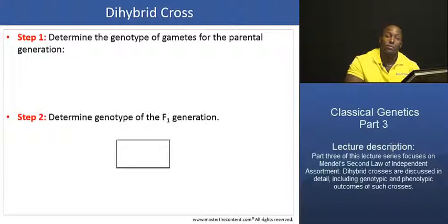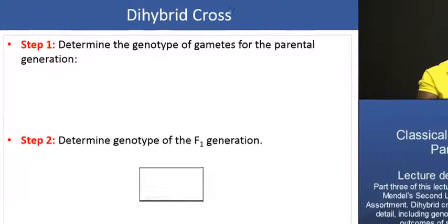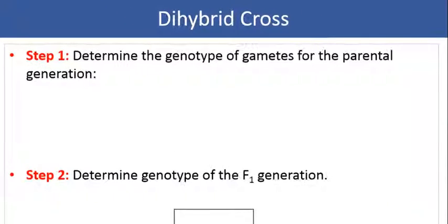The first thing we're going to do is determine the genotype of the gametes for the parental generation. We can use a capital T and a capital P to represent the dominant alleles for the tall and purple flowered phenotypes, respectively. And similarly, we can use a small t and a small p to represent the recessive alleles for the short and white flower color phenotypes.